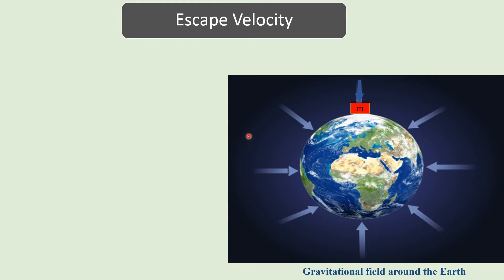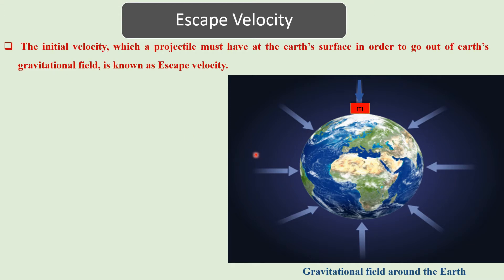If we increase the initial velocity of that projectile, it will take longer time to return back to the ground. If we continuously increase the initial velocity, at some point the projectile will go out of the earth's gravitational field and will never come back. The initial velocity which a projectile must have at the earth's surface to escape earth's gravitational field is known as escape velocity.